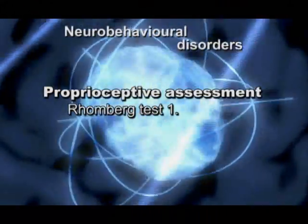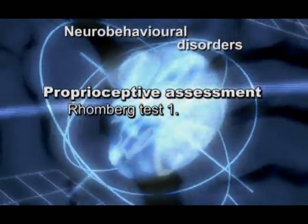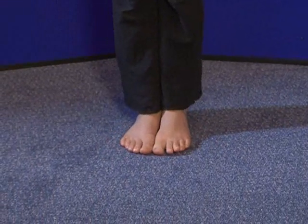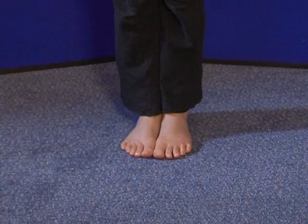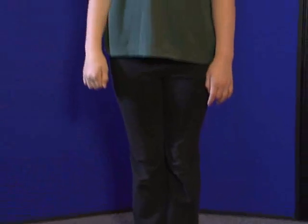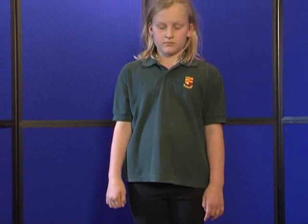Proprioceptive assessment — Romberg test number one. Patient standing with eyes open, asked to bring the ankles together to touch. Observe for a sway to one side. If none, the patient closes the eyes. Hemisphere weakness is on the opposite side to the sway.